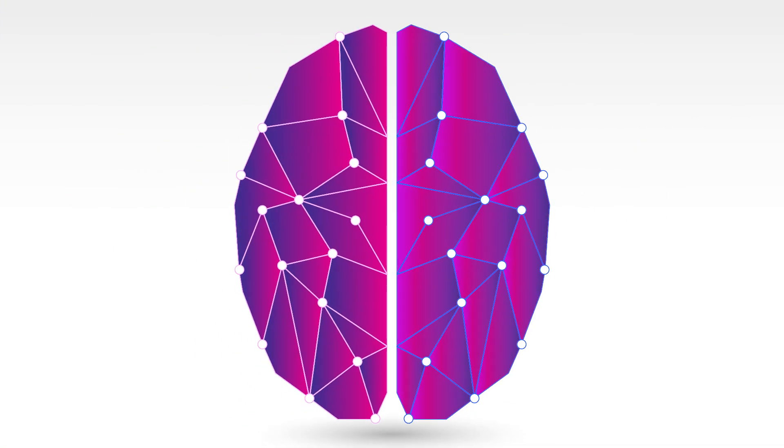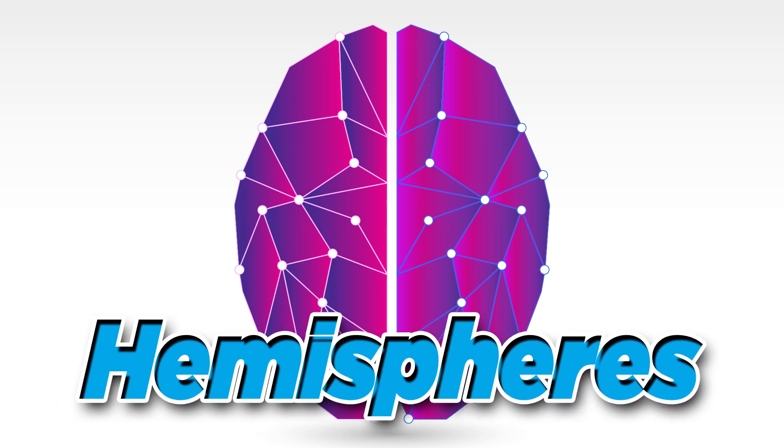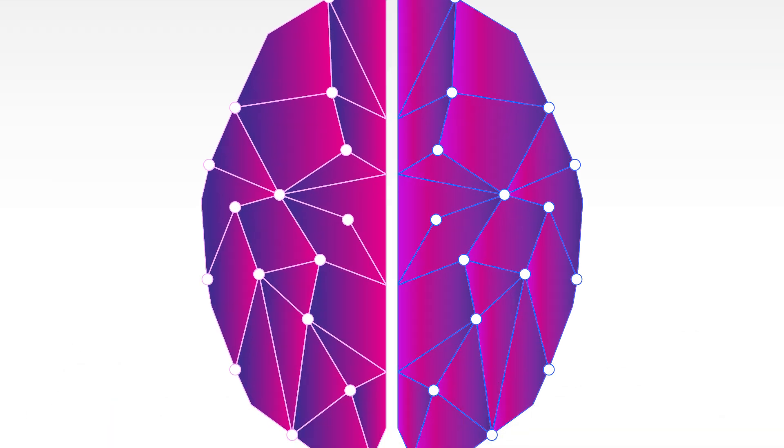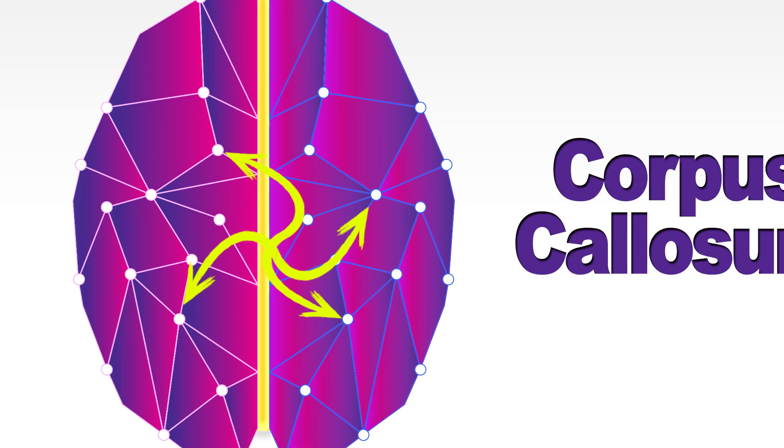The brain does have two sides, called hemispheres, each of which controls certain functions. The hemispheres communicate by sending signals across a bundle of nerves in the middle called the corpus callosum.